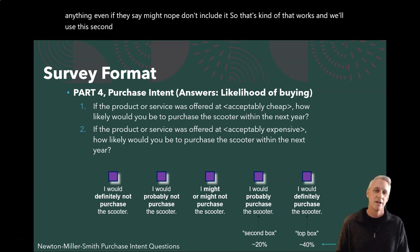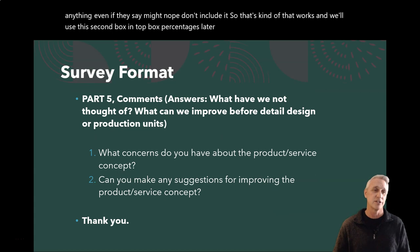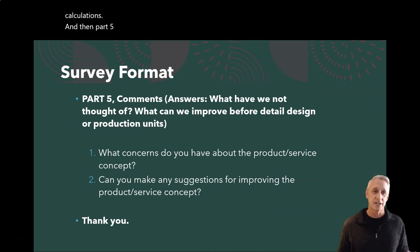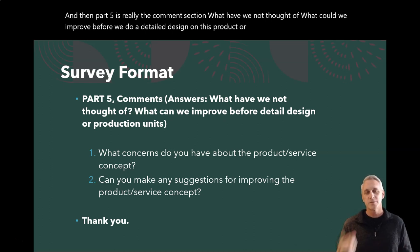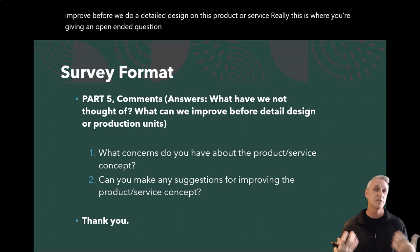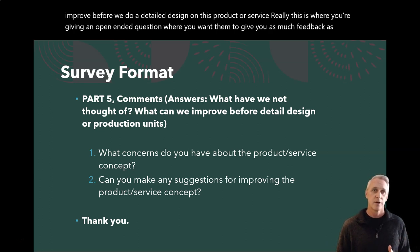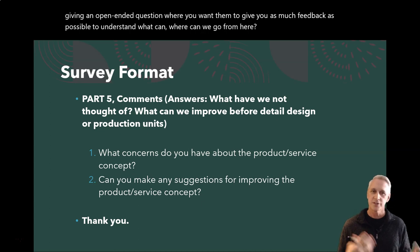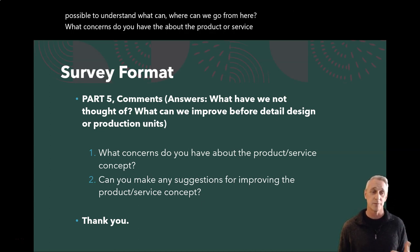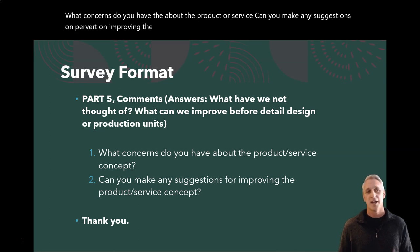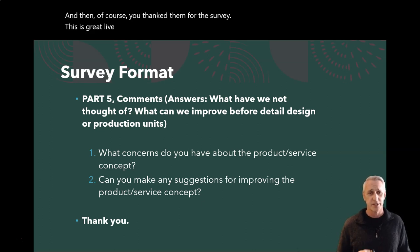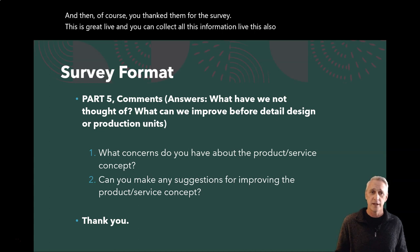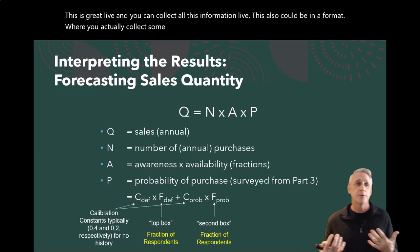We'll use these second-box and top-box percentages later on when we try to do some calculations. Part Five is really the comment section — what have we not thought of, and what can we improve before we do a detailed design on this product or service? This is an open-ended question where you want them to give you as much feedback as possible. You can collect all this information live, or it could be in a format where you actually collect some survey data.